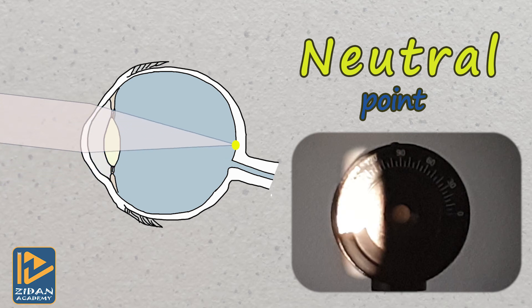So when a moving streak of light, such as retinoscopy light, falls exactly on the retina like in this animation, it will be reflected from the surface of the retina in the form of diffuse bright light, and it will not be moving as the retinoscopy light is moving.